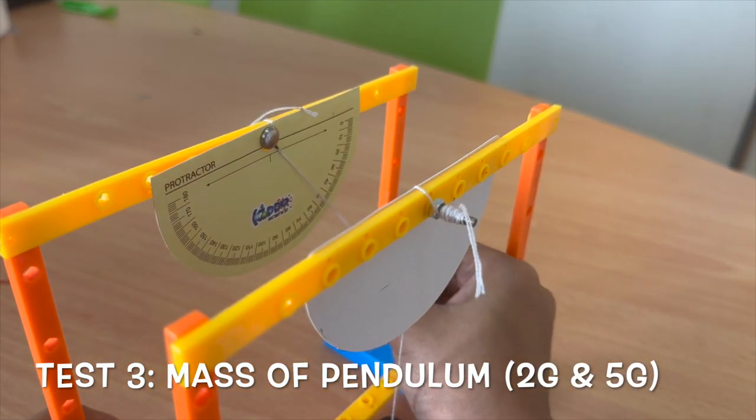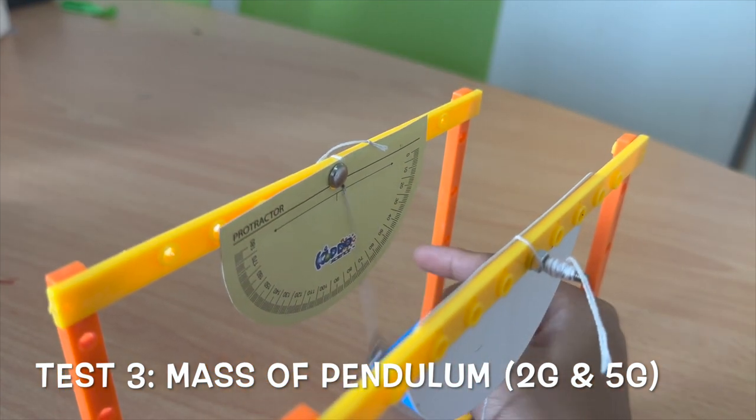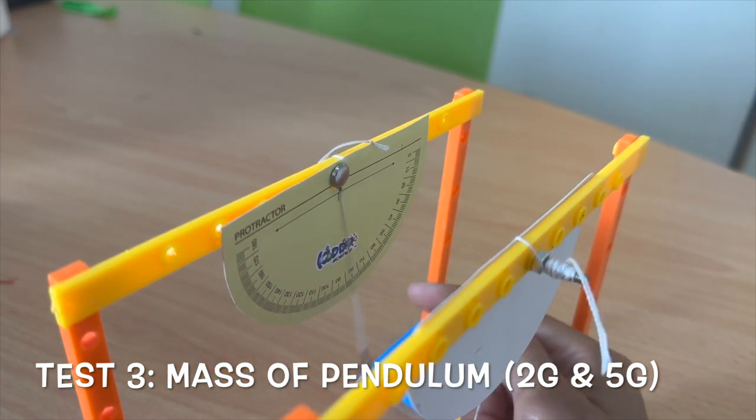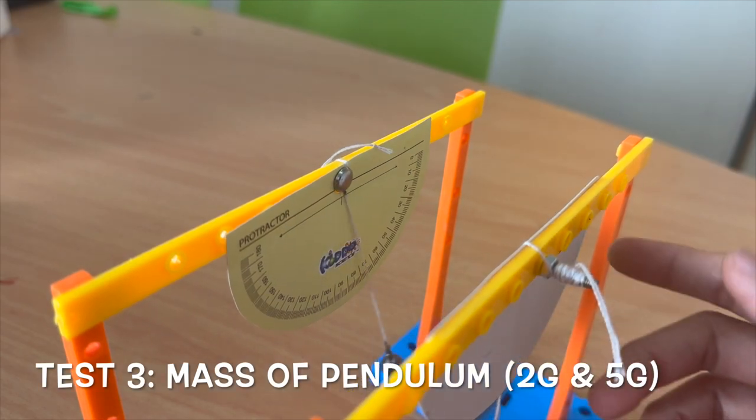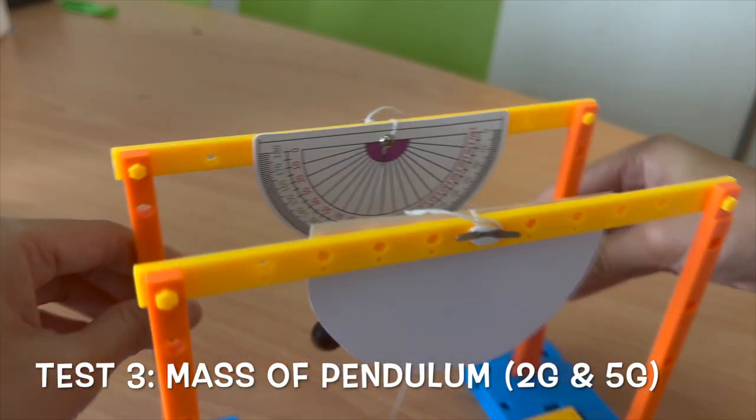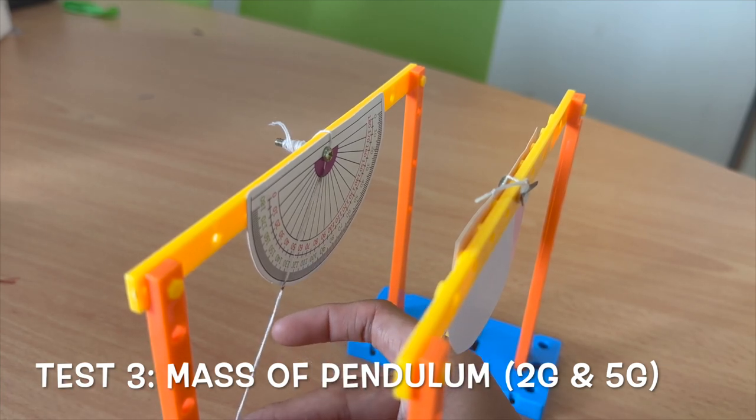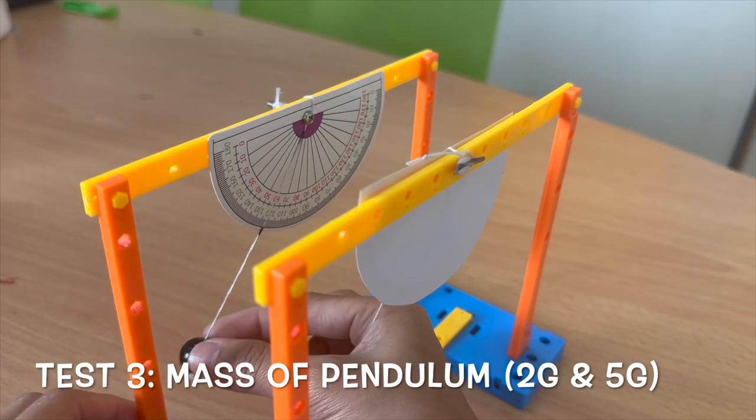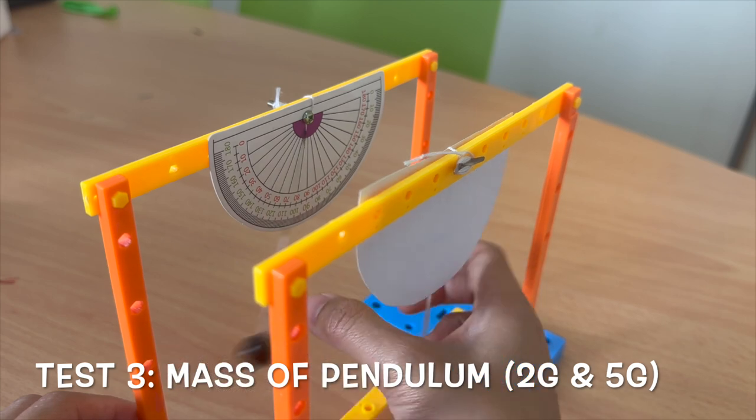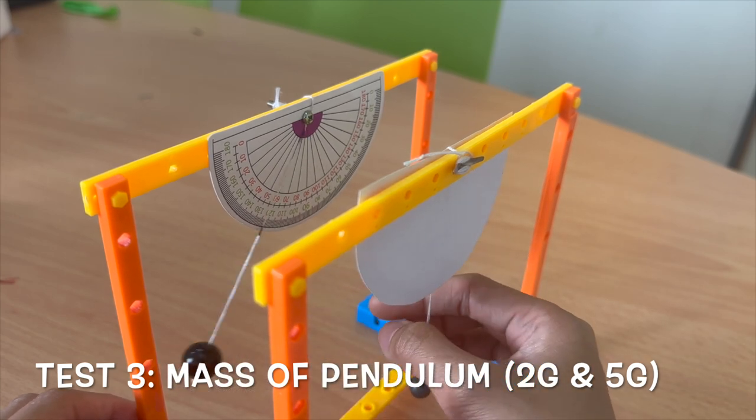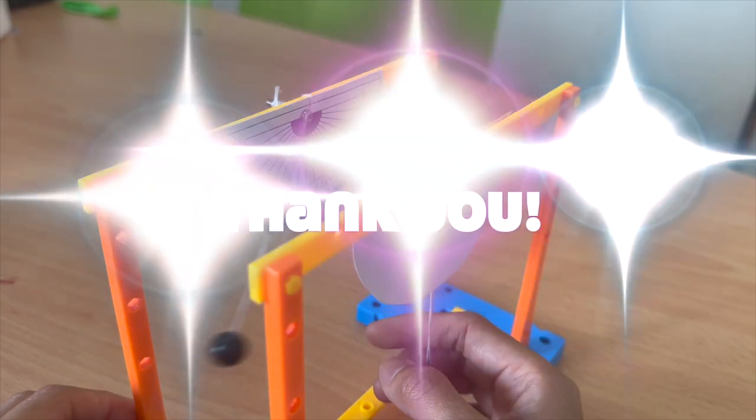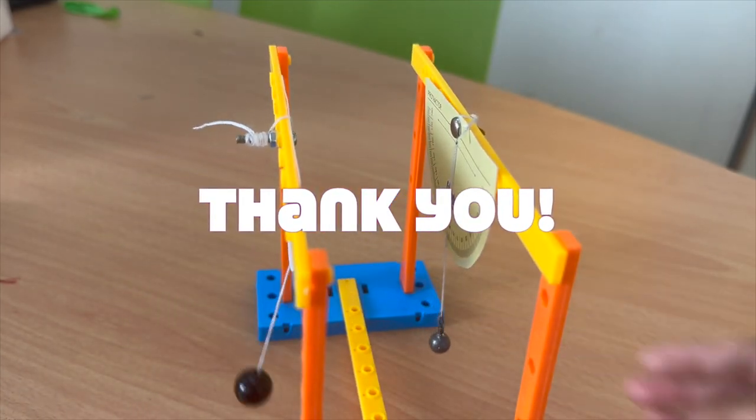So I test at 50 degree the angle. I let go. Observe the time taken for 10 oscillation. Same goes to 2 gram pendulum. Test at 50 degree the angle and observe the time taken for 10 complete oscillation. So that is for test number 3.